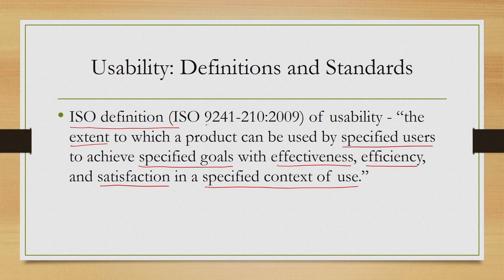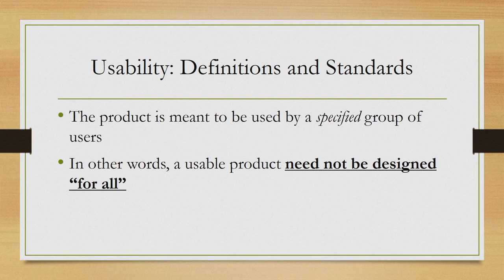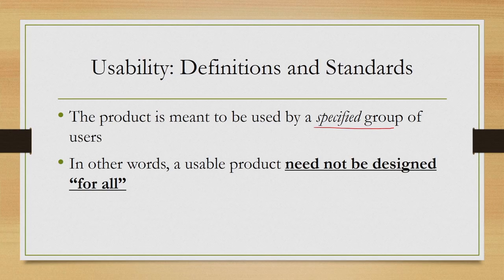This is the ISO 9241-210-2009 definition of usability. Looking at the definition, there are three crucial aspects to notice. The first is that the product is meant to be used by a specified group of users — it is not meant for all. When we are talking of a usable product, we are talking of a product that should be used by a specific group of users, and we are not talking about a product which is usable to all. We need not design a product as usable for use by everyone.